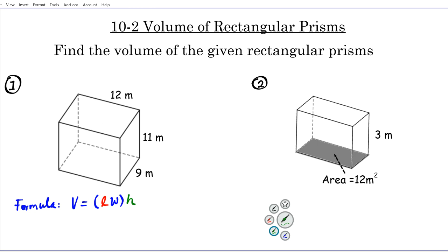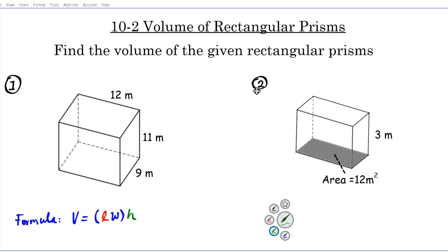In question one, you can basically pick what you want to call the base. The base could be the top or the bottom, the front or the back, the left or the right. Whatever face you pick to be the base, the side not included in that face is the height. Let's keep it simple and call the bottom the base — the surface the rectangular prism is sitting on. The dimensions of the bottom are: this side here is nine meters, and this side is twelve meters, so the width is twelve meters.